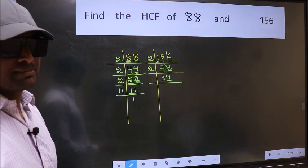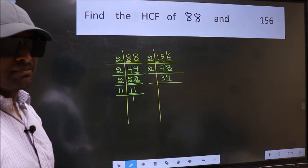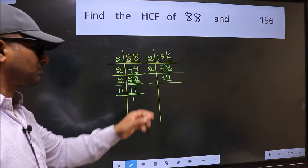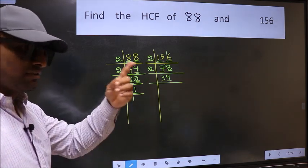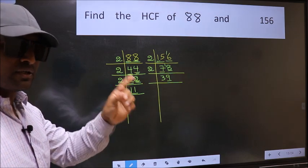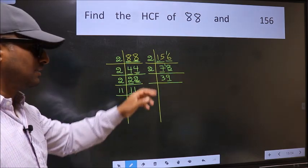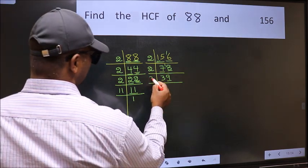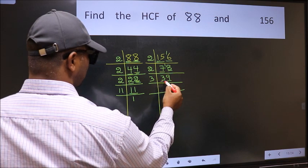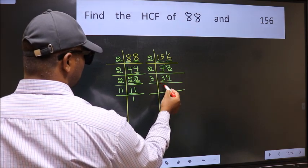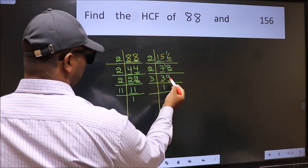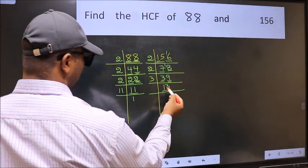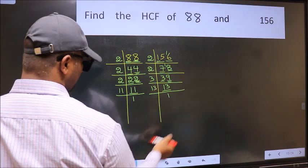Next prime number 3. To check divisibility by 3, we should add the digits. 3 plus 9 gives 12, and 12 is divisible by 3, so this number is also divisible by 3. So take 3. First number 3: when do we get 3 in the 3 table? 3 once is 3. The other number 9: when do we get 9 in the 3 table? 3 threes are 9. Now 13 is a prime number, so 13 once is 13.